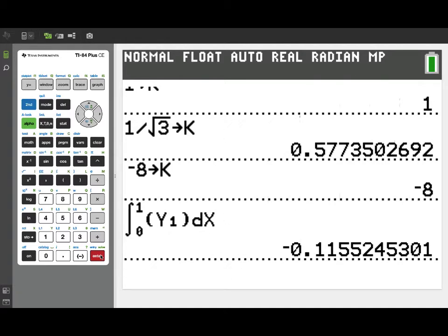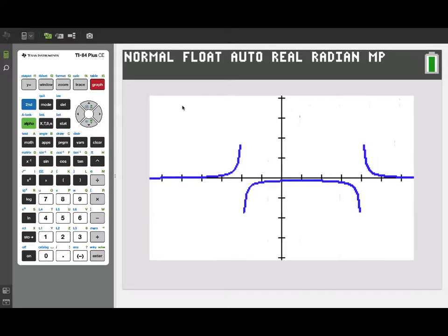And that looks like it makes sense from the graph. It's a small magnitude negative number. Actually, let's return to the graph and take a look. Yeah, that makes sense. Between 0 and 1, we should get a small magnitude negative number.